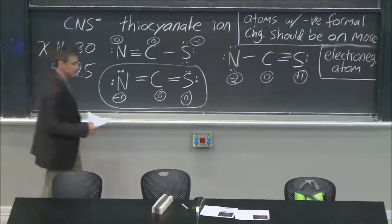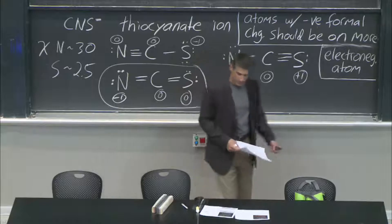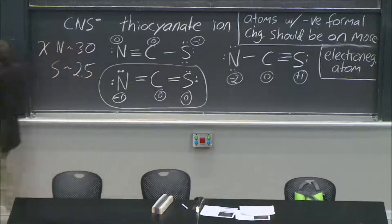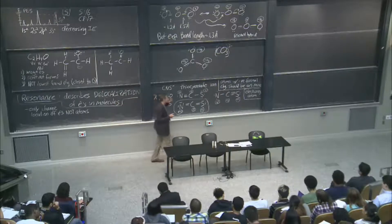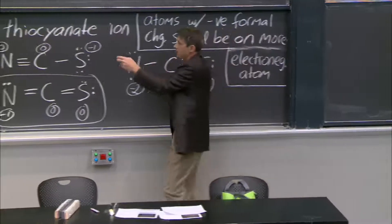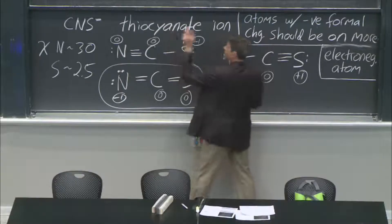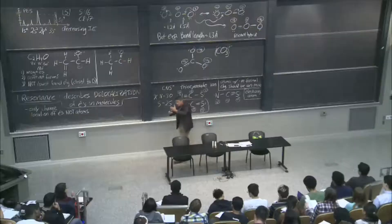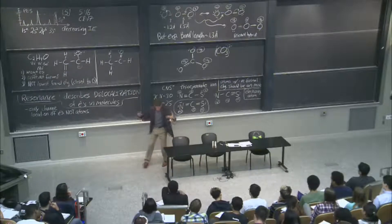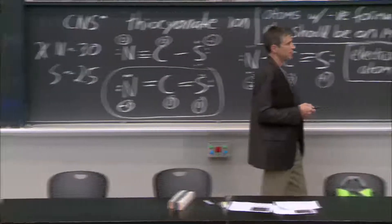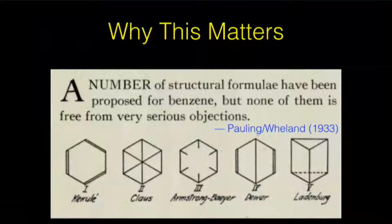Why does this matter? I'm talking about delocalization to stabilize, and about how the actual structure of a molecule isn't a rigid two bonds here, one bond there. In ozone, it's shared equivalent bonds where the electron is shared and the whole system is lowered in energy. There is one molecule where this is very much important and dictates all of its chemical behavior, and that's benzene.